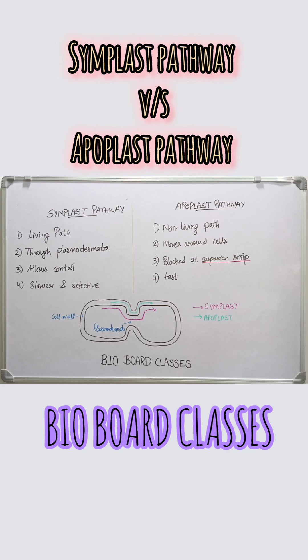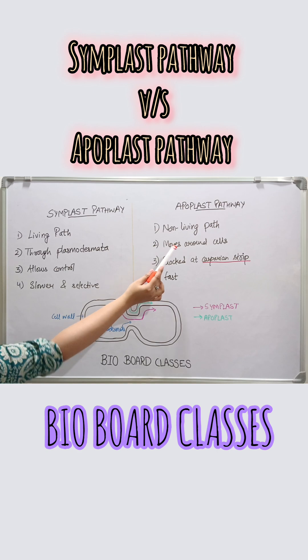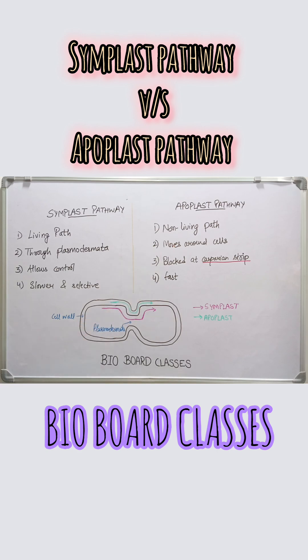They act like a bouncer — no shortcuts allowed. So in a quick recap: the apoplast is fast with no control, moves through cell walls, and is a non-living pathway. Whereas the symplast is a living pathway where water moves through the plasmodesmata — it is slower, selective, and water moves through the cytoplasm.